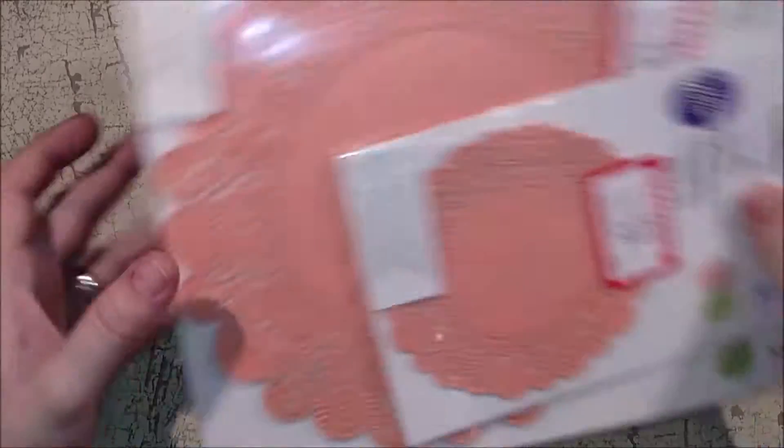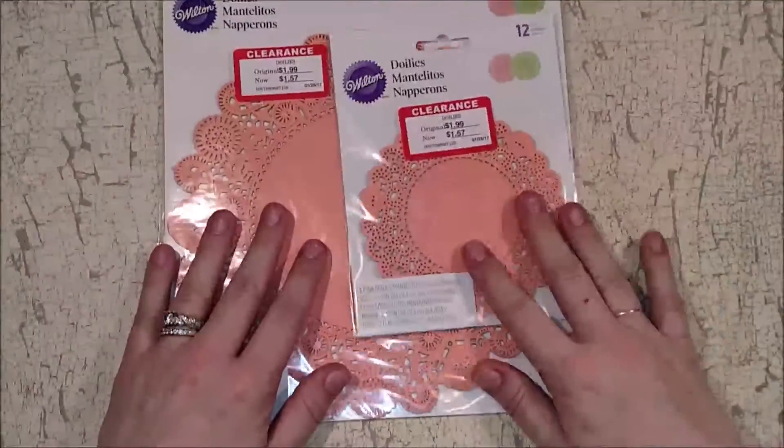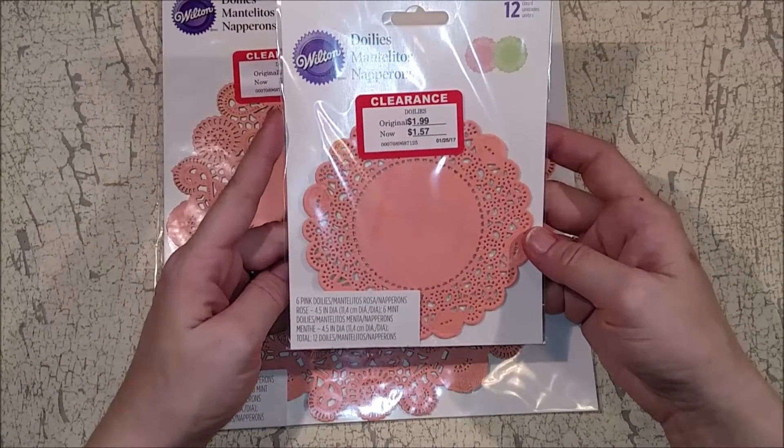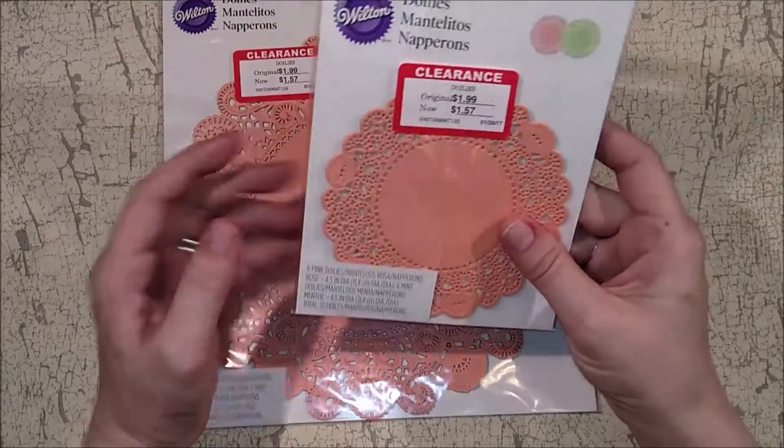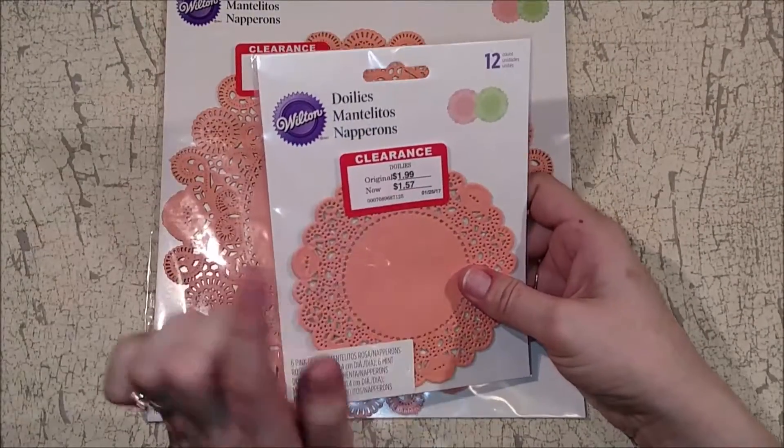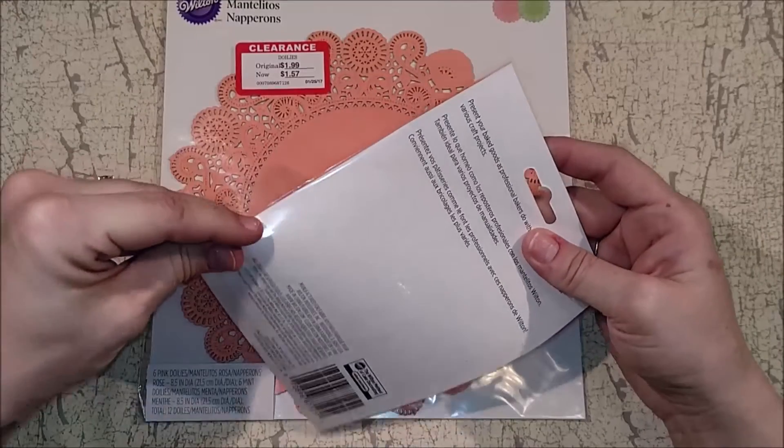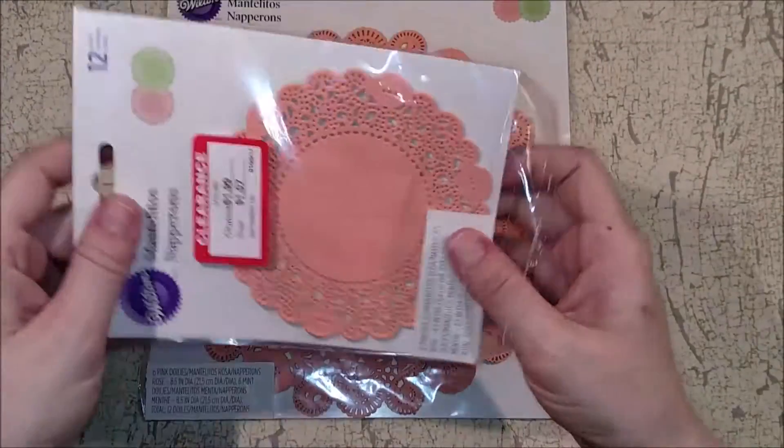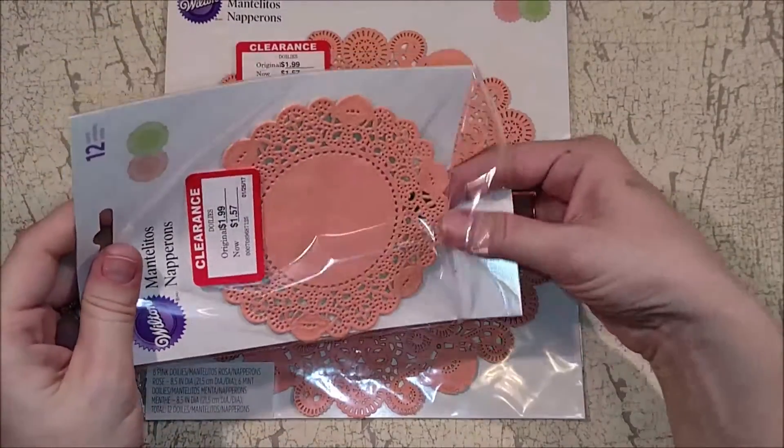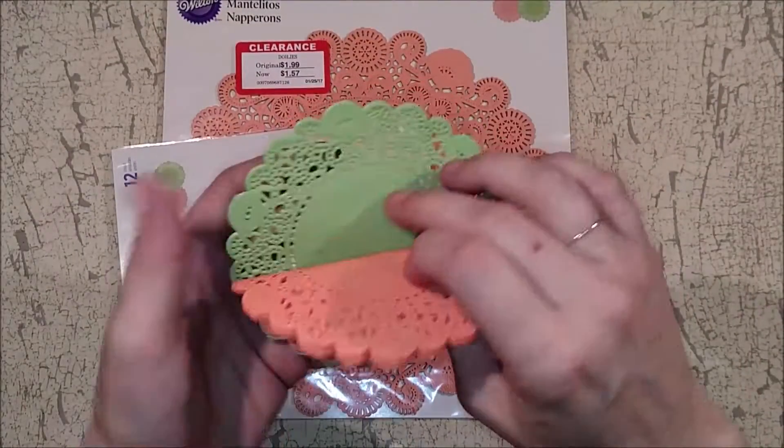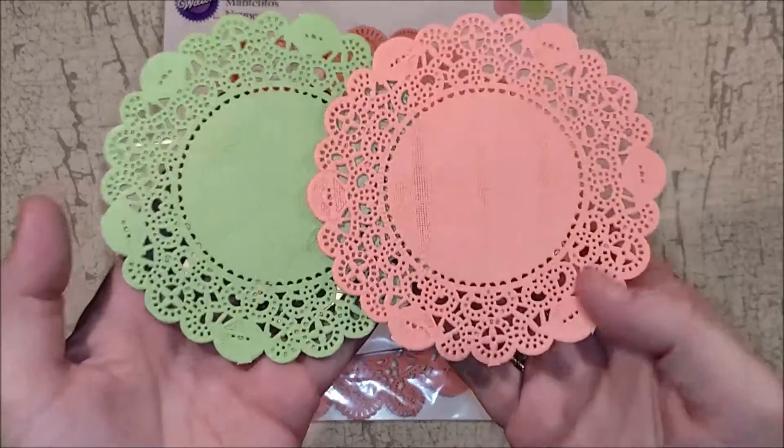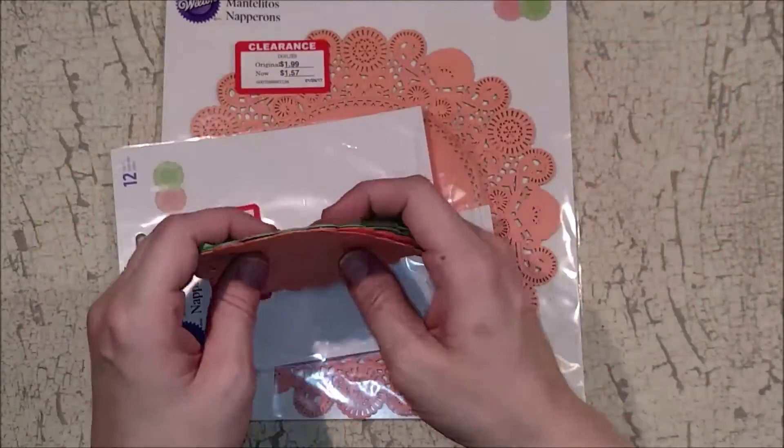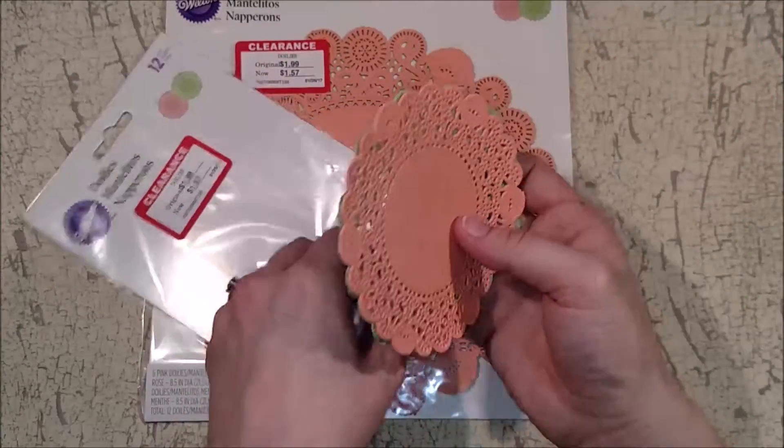And then I got these at my local Fred Meyer. Which I've told you guys about before. And these are Wilton doilies. And there are peach and mint in here. And then they were $1.57 and an additional 40% off for the little ones. So, I'll show you the color. These are just paper doilies. But I will show you the color. It's really spring. Really pretty.